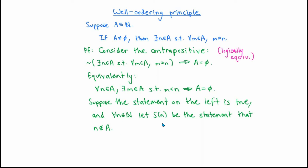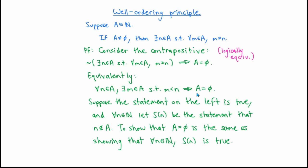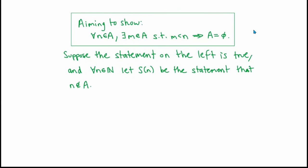Also from our video about logical statements, we know how to rewrite the negation of the existential statement on the left as a universal statement. Doing this, the statement on the left becomes: for every n in A, there exists an m in A such that m is less than n. We're trying to prove that if the statement on the left is true, then the statement on the right is true. So let's suppose that the statement on the left is true, and for every integer n in ℕ, let s(n) be the statement that n is not an element of A. We're trying to show that A is the empty set, and to do that is the same as proving that n is not an element of A for any n in ℕ — in other words, showing that s(n) is true for every n. That's something we can do by using the principle of mathematical induction.